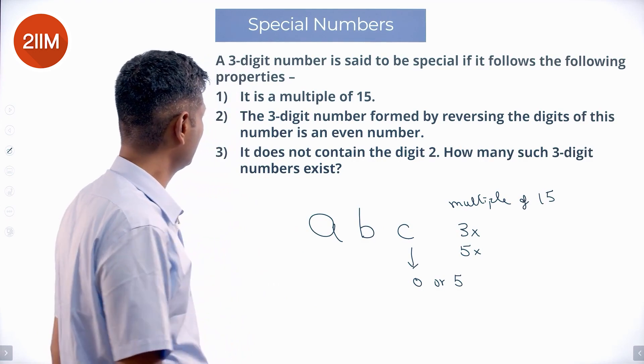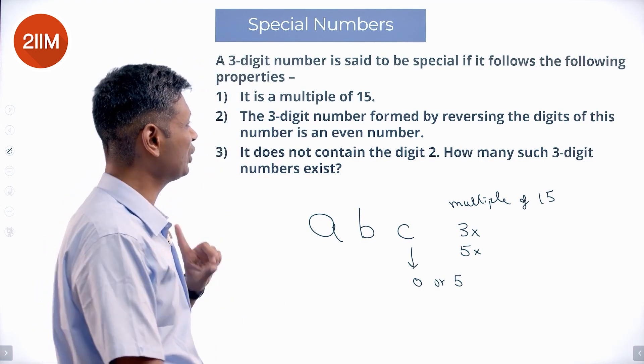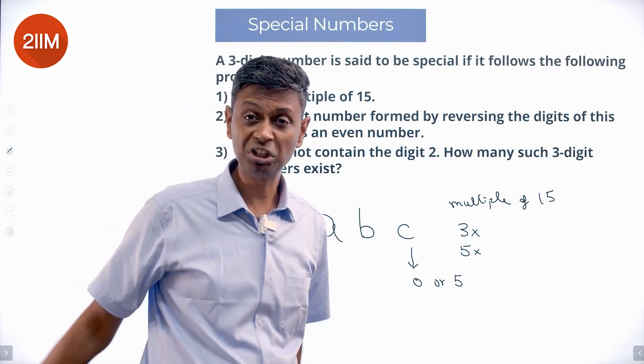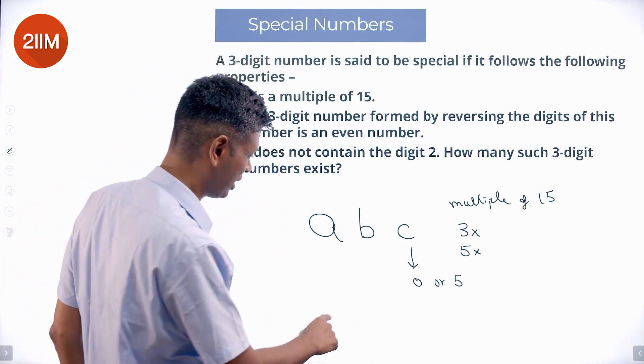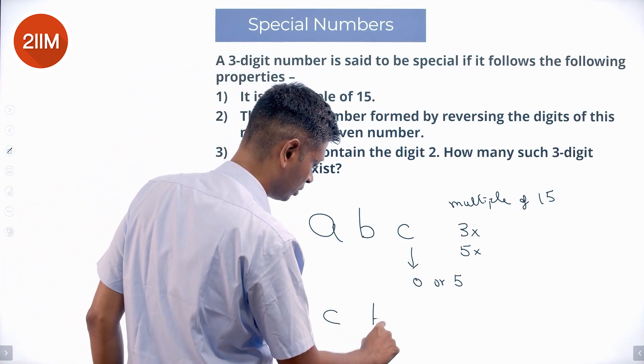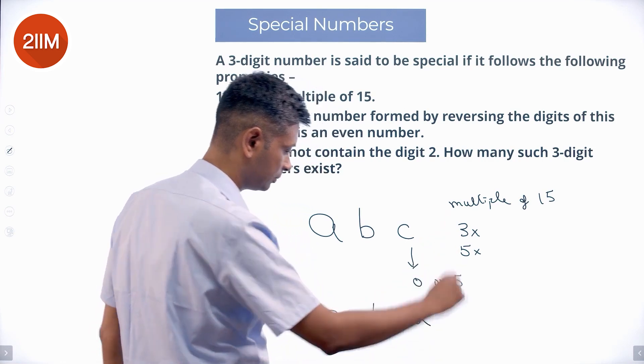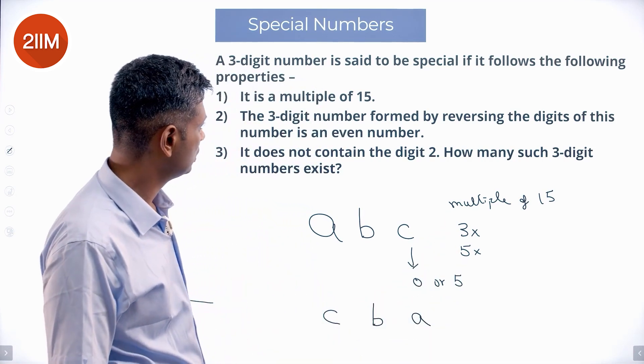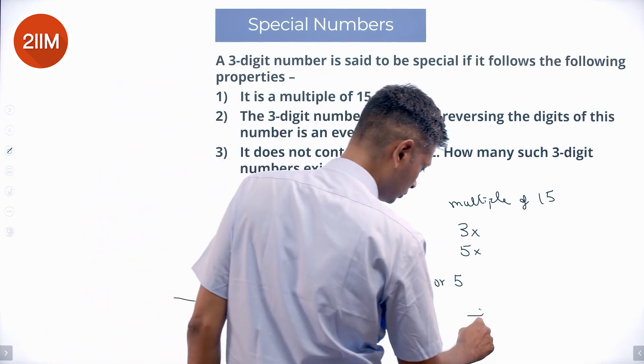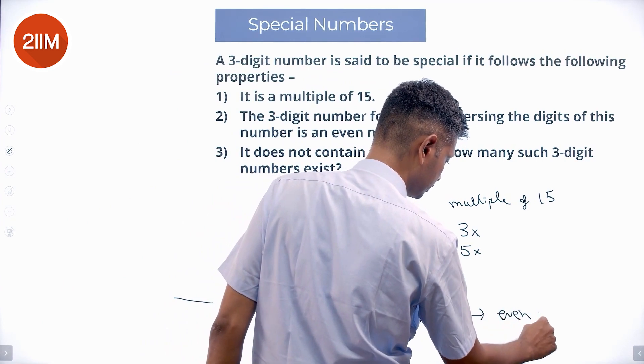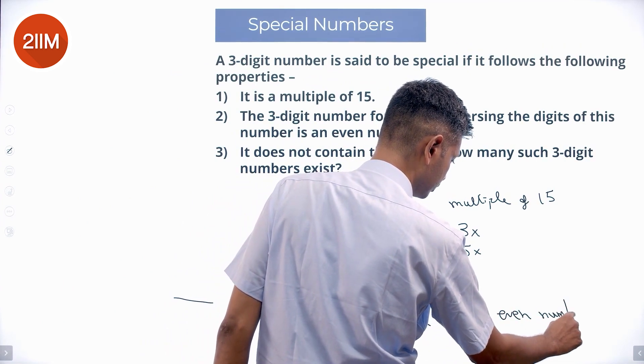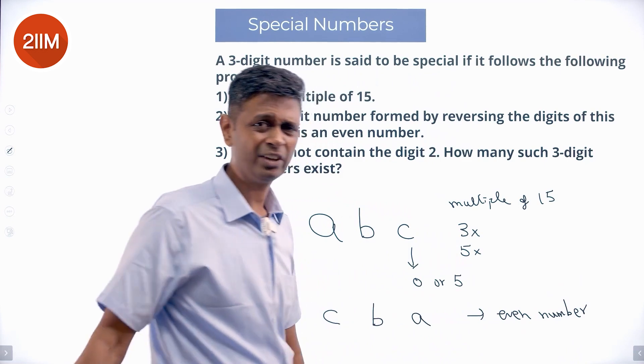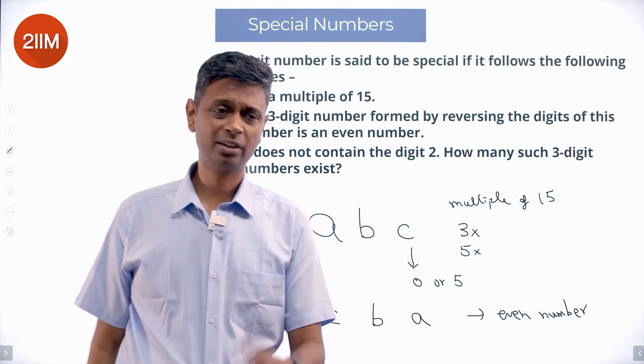Let's go to the next condition. The three-digit number formed by reversing the digits of this number is an even number. I am reversing this digit, so I have, I get myself C, B, A. This is an even number. Even number should end in 0, 2, 4, 6, or 8.